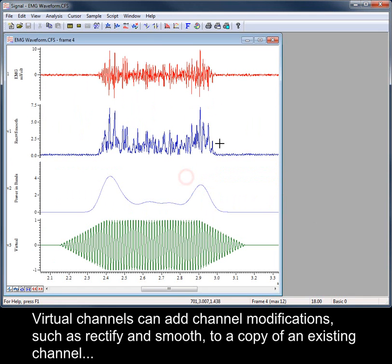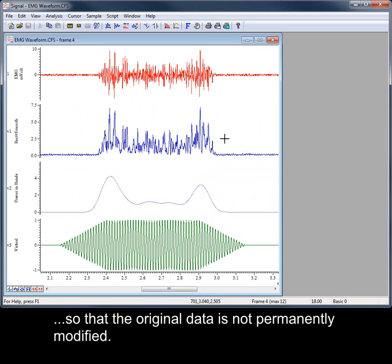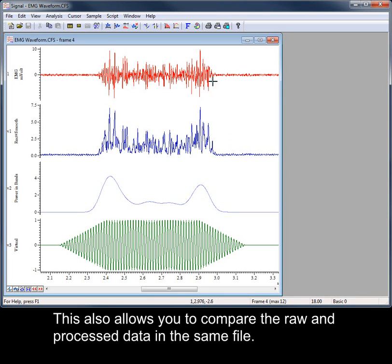Virtual channels can add channel modifications such as rectify and smooth to a copy of an existing channel, so that the original data is not permanently modified. This also allows you to compare the raw and processed data in the same file.